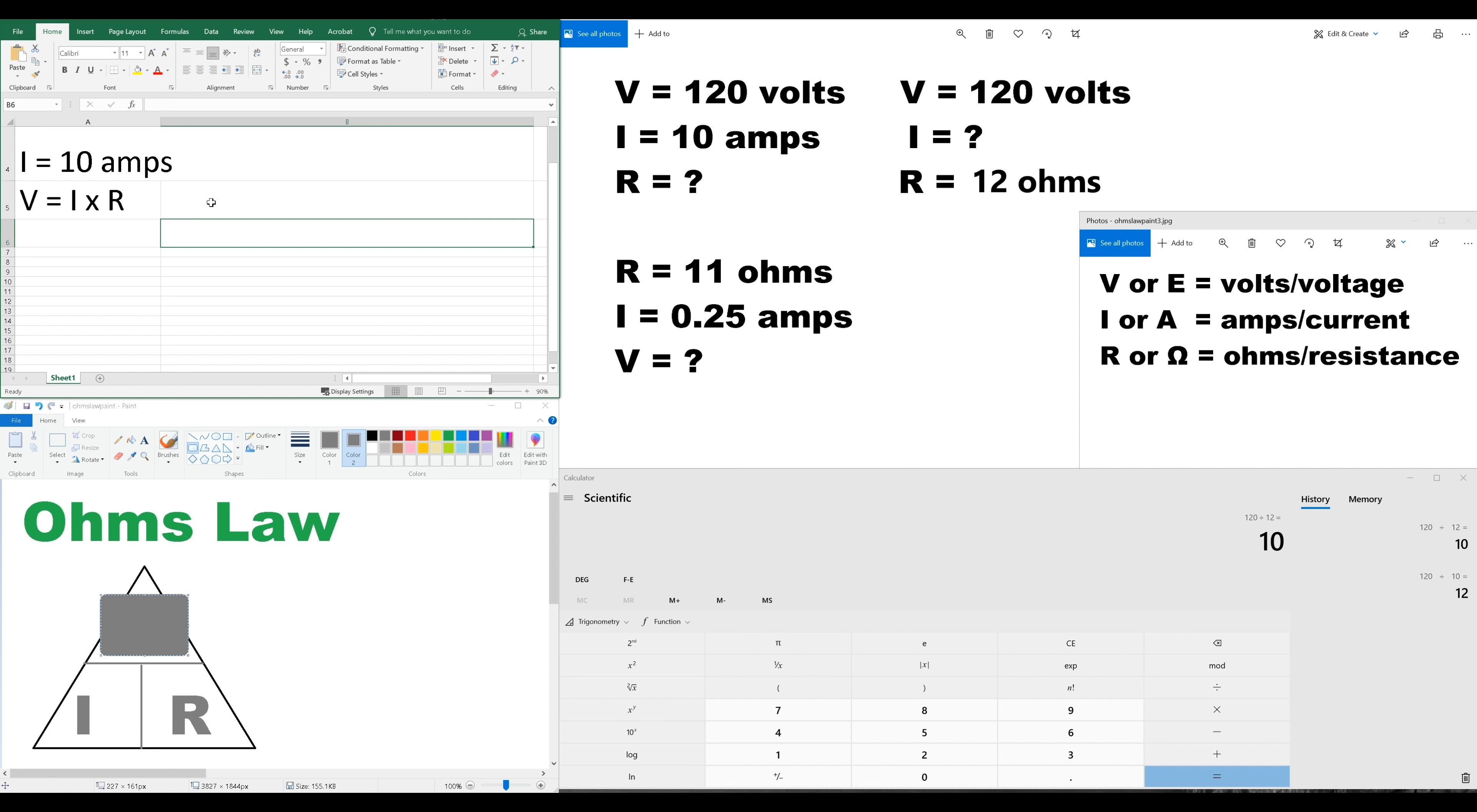So, what we're going to have is V equals I times R. There we go. So, V equals, in this case, 0.25 amps times an R value of 11 ohms.